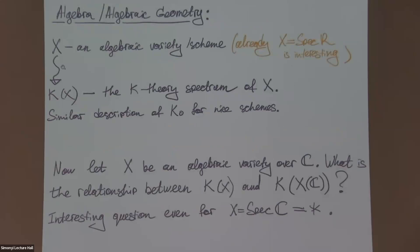There is a similar story in algebra and algebraic geometry where you start with an algebraic variety or a scheme. An algebraic variety is something like a set of solutions of a system of equations, but actually this sort of formalism is able to talk geometrically about questions in number theory. It can take as input any commutative ring. And this question, what is K-theory of an algebraic variety or a scheme, is already interesting in this case.